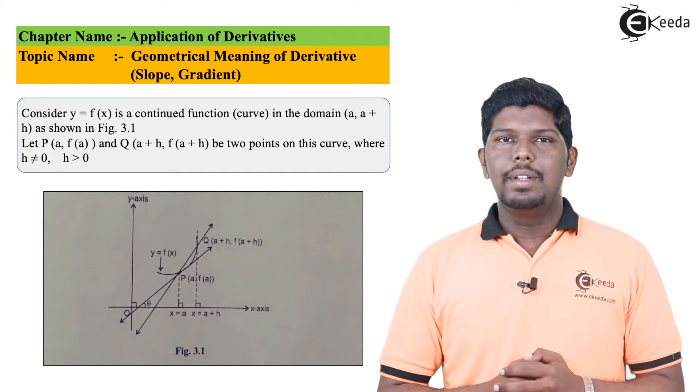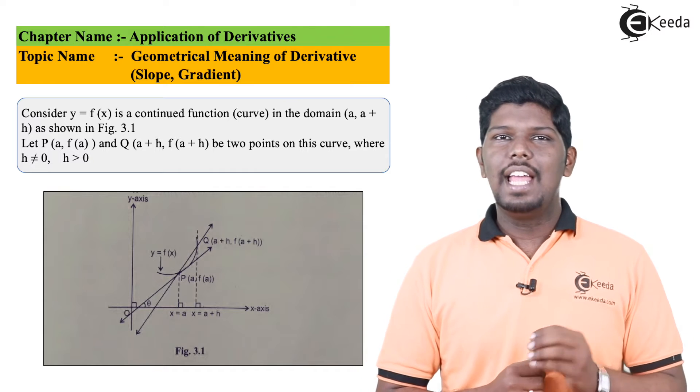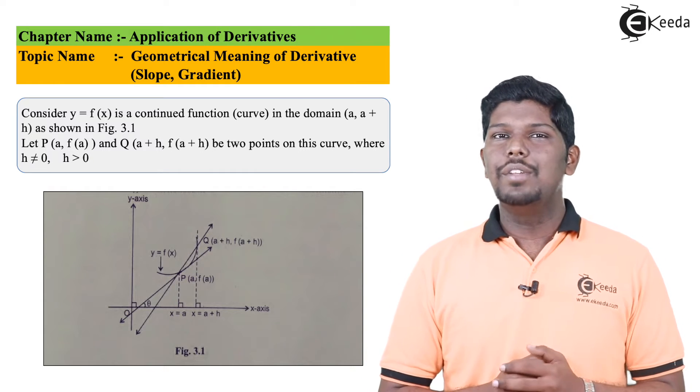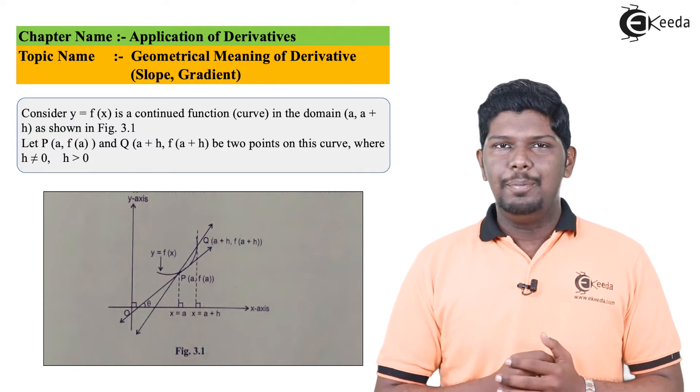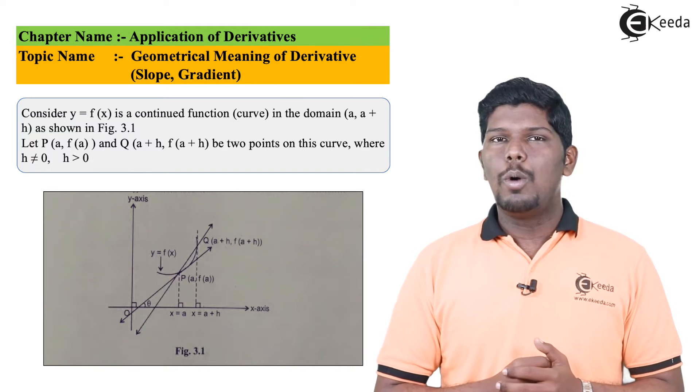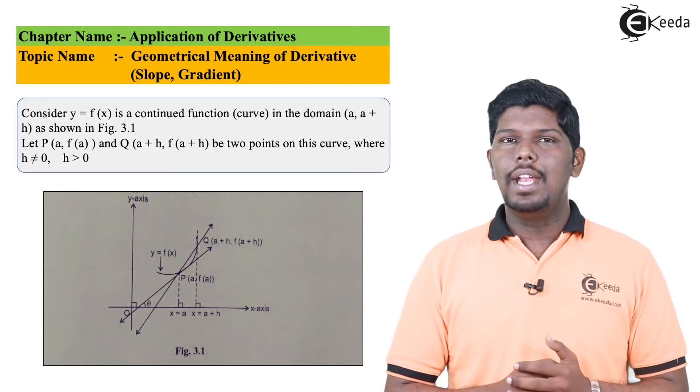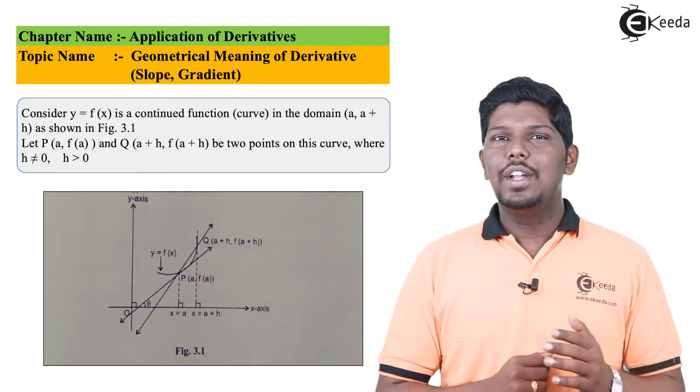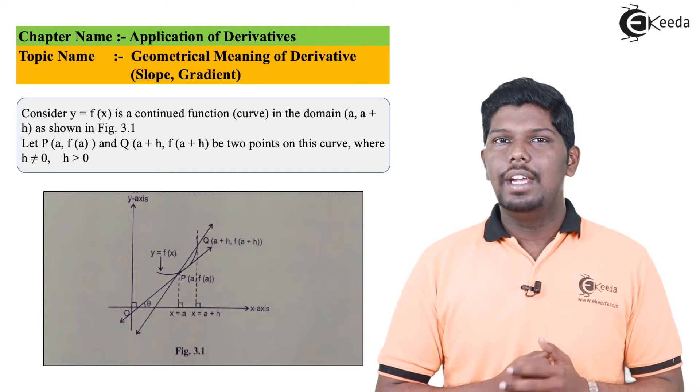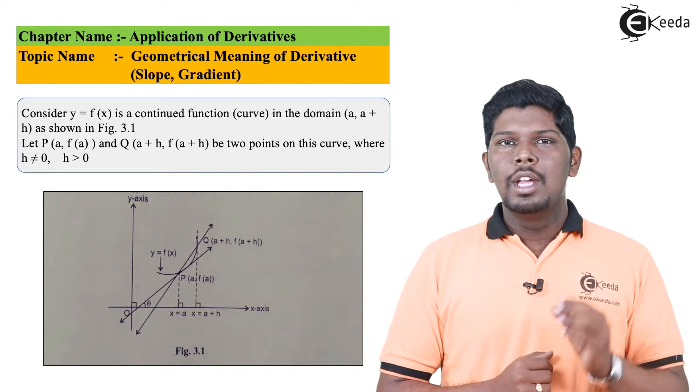Next thing that we are going to do is draw a secant. Now what is a secant? A secant is a line which intersects the curve in two different points. So if I try to join P Q, I will get a line. And let us find the slope of the line. We know that m is given as (y2 - y1)/(x2 - x1), or you can say difference of y coordinates divided by difference of x coordinates.